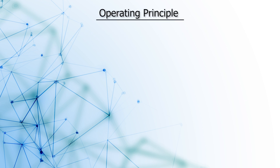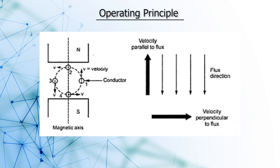Operating principle: with two poles — north and south — and the winding shown, we have a single conductor placed under the magnetic field produced by two stationary poles. As we rotate this rotor with the help of a prime mover, we get the required rotating magnetic field.